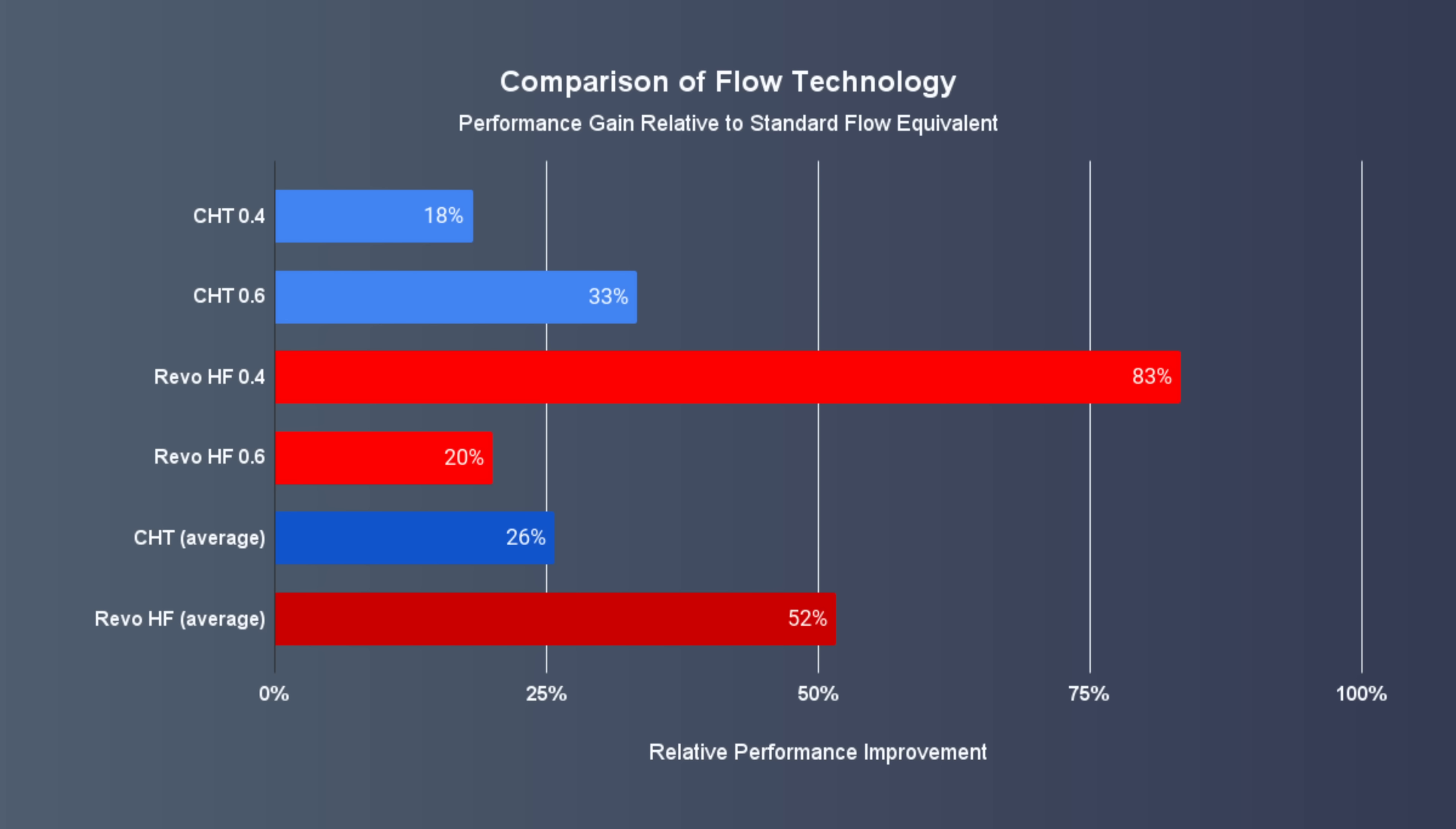Using this data we can also compare the two flow enhancing technologies CHT and Revo HF. In my testing on average CHT improved performance by 26% while Revo HF improved performance by 52%. This suggests that Revo HF could outperform CHT in an otherwise identical hotend configuration.